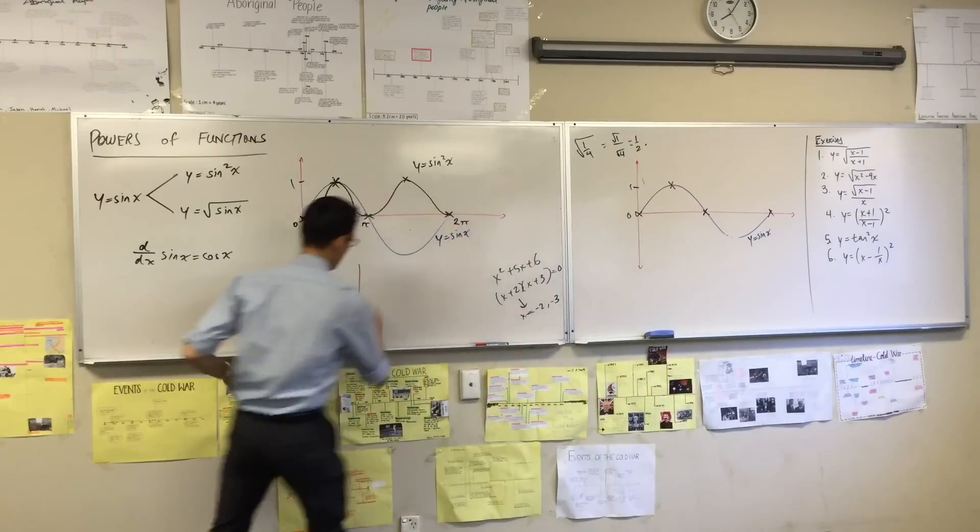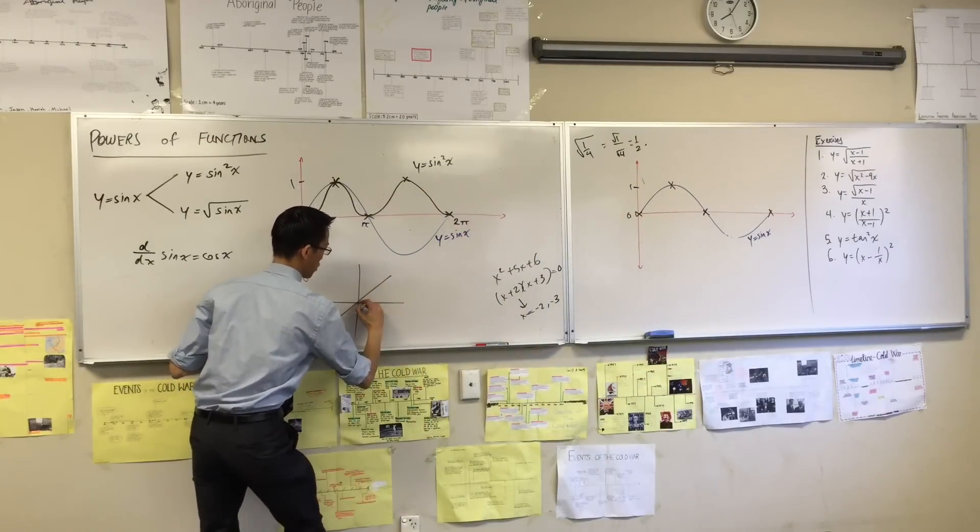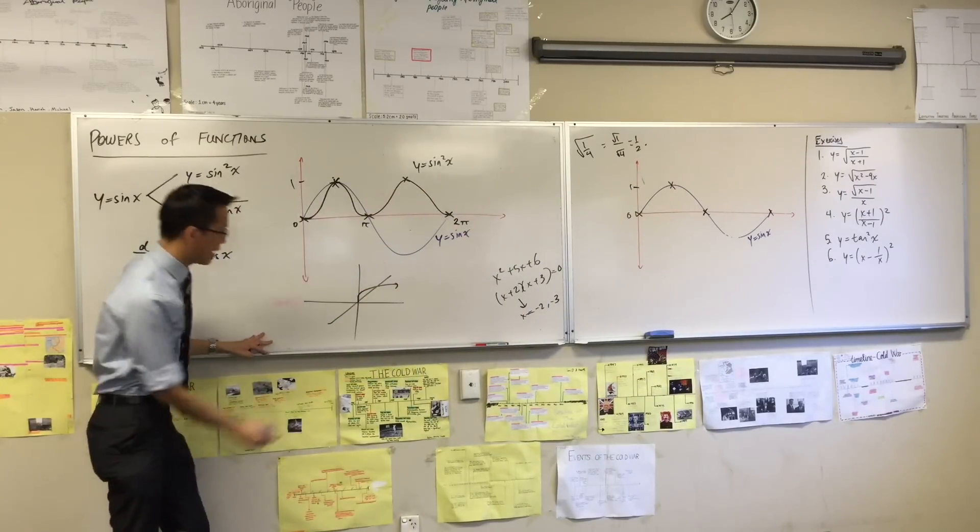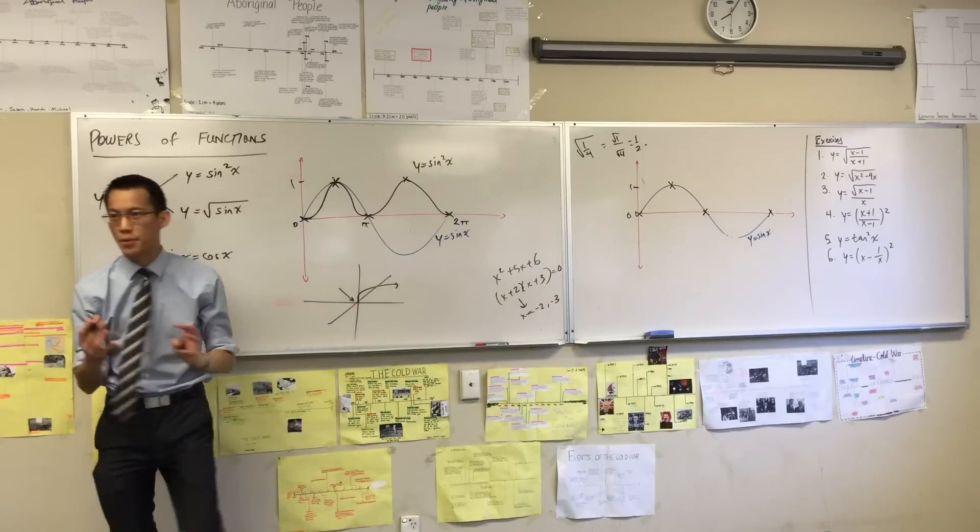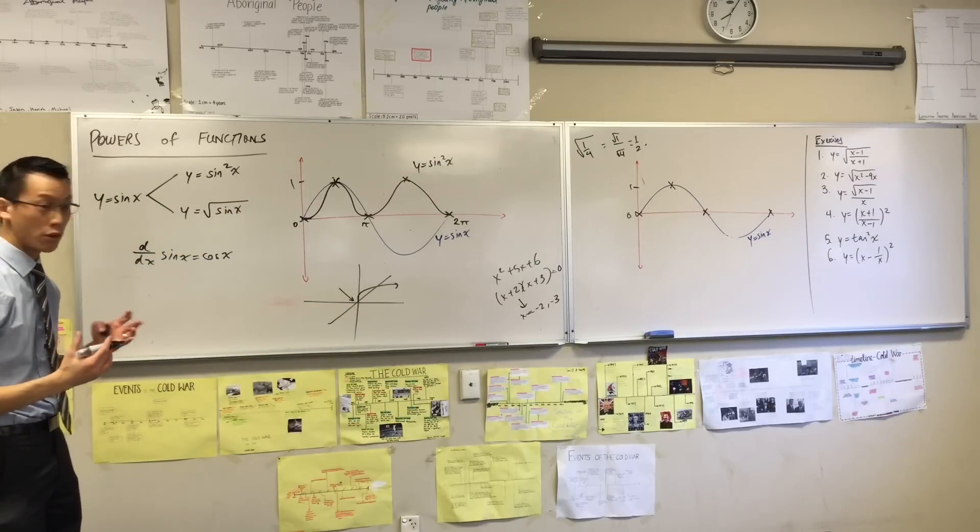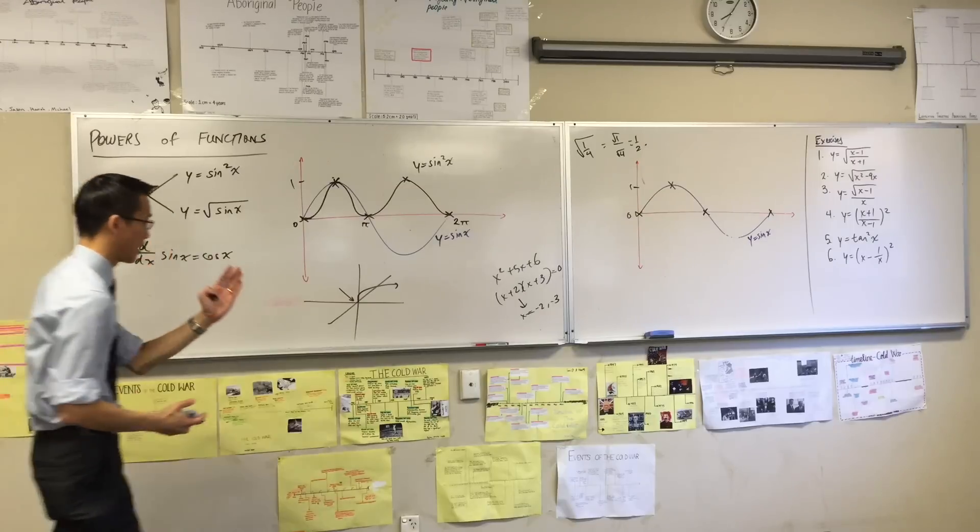Do you remember when we did x versus the square root of x, right? I noted something weird was happening at the origin. What's happening at the origin? No gradient. You've got no gradient, okay? You've got this vertical tangent there.